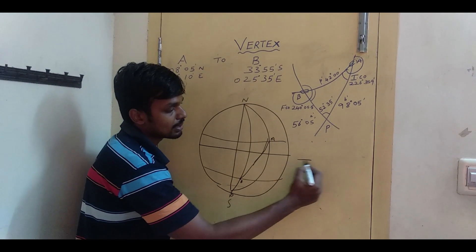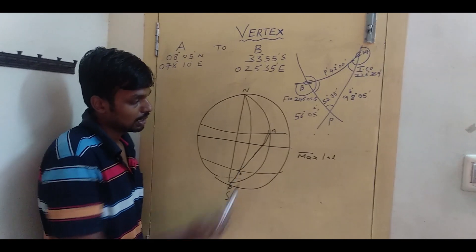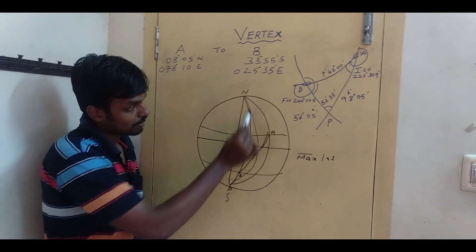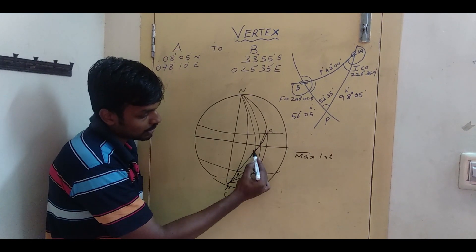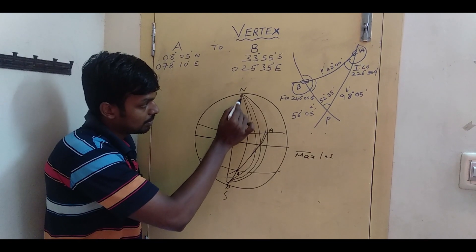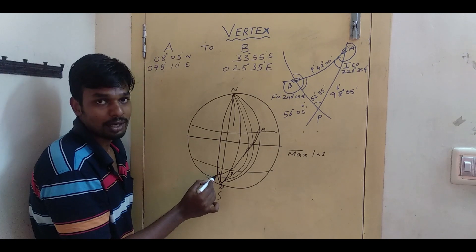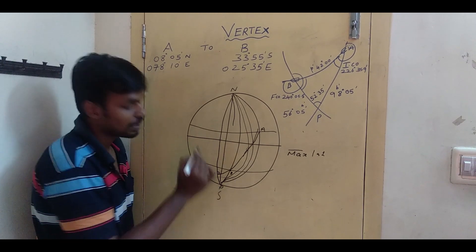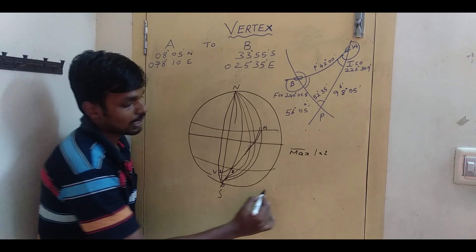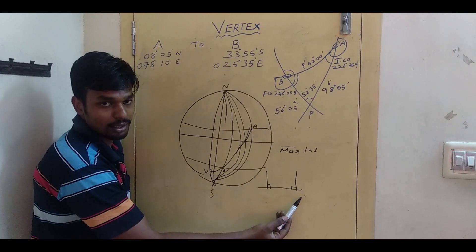The vertex is the point where the great circle track reaches maximum latitude. All the meridians will cut this great circle track at a certain angle, but at some point the meridian will cut exactly at a right angle — that is the vertex. The initial course here is 226° and the final course is 240°.